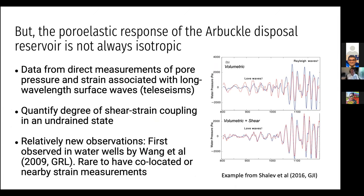Today I'm hopeful I can show you that the poroelastic response of the Arbuckle is not always isotropic. To do that, we're going to use data from direct measurements of pore pressure and strain nearby. We use signals from long-wavelength surface waves from large distant earthquakes — teleseisms — and we want to quantify the degree of shear strain coupling in the undrained state. Teleseismic waves offer us a chance to do that, or at least approximately reach the undrained state.